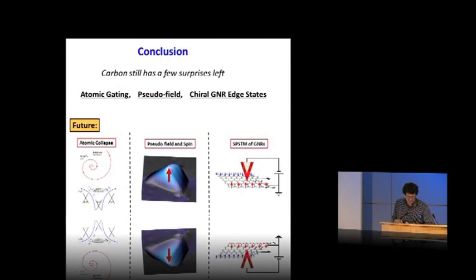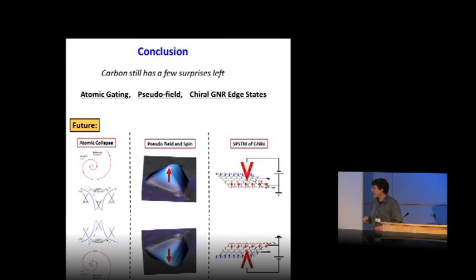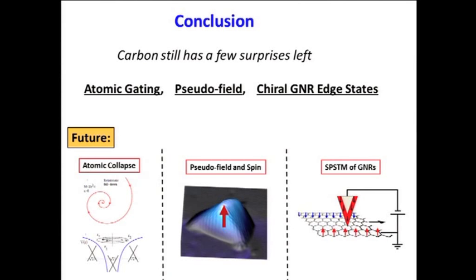I'll conclude by saying that carbon still has a few surprises left. I've told you a little about what happens when we sprinkle atoms down on graphene, how we're able to measure pseudo-magnetic field effects on graphene, and how we have discovered the presence of an edge state on chiral graphene nanoribbons. There's still a lot of things to do in the future.